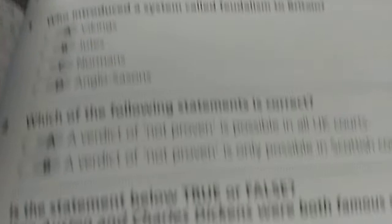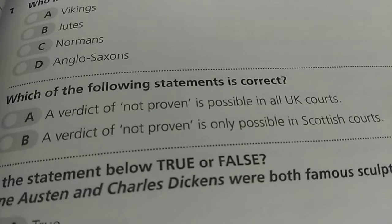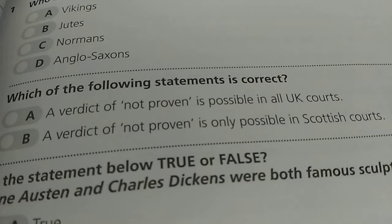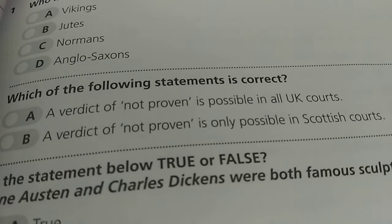Question No. 2: Which of the following statements is correct? A. A verdict of not proven is possible in all UK courts. B. A verdict of not proven is only possible in Scottish courts. The correct answer is B — a verdict of not proven is only possible in Scottish courts.